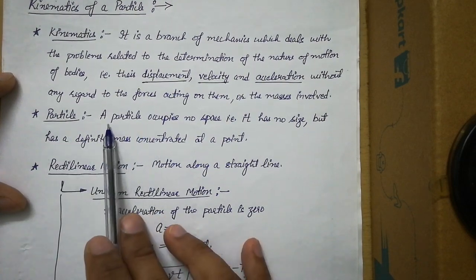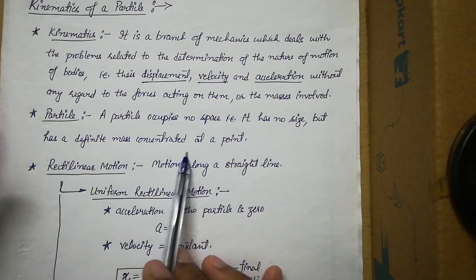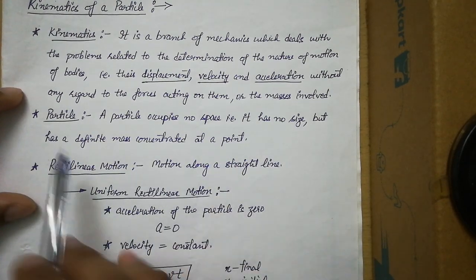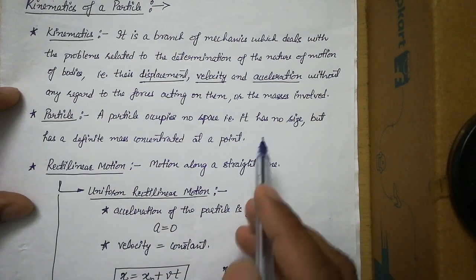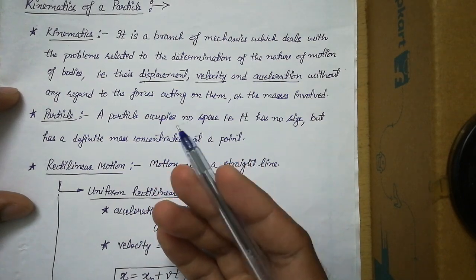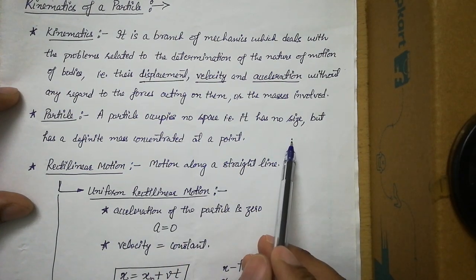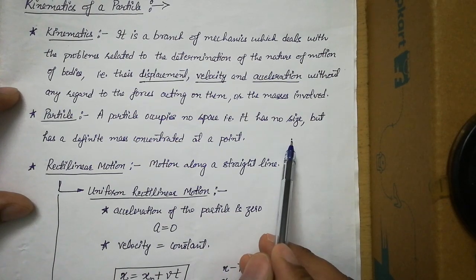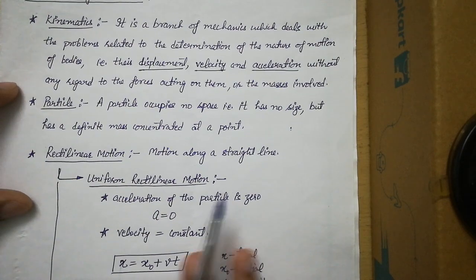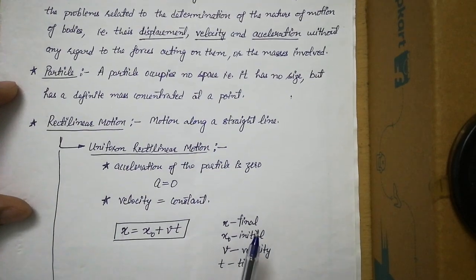We are not concerned about any force or the mass of the body; we are only concerned about displacement, velocity, and acceleration. Next, the definition of a particle: a particle occupies no space, that is it has no size, but has a definite mass concentrated at a point. We consider the concept of particle in mechanics to solve problems — for example, if dealing with an aeroplane, we consider it as a point, assuming it occupies no space and there is no rotation about its own axis.